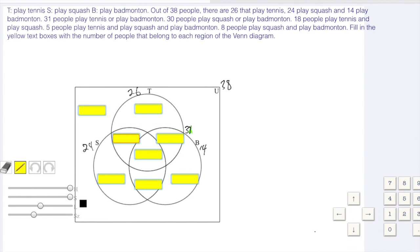30 people play squash or play badminton. So squash or badminton is going to be down here. 30. 18 people play tennis and play squash. So tennis and squash. That's everything inside here. To indicate that, I am going to put my 18 here on the border of those two little regions. 5 people play tennis and play squash and play badminton. That means 5 people are right in this little text box right there. Click on the 5. So that's 5.